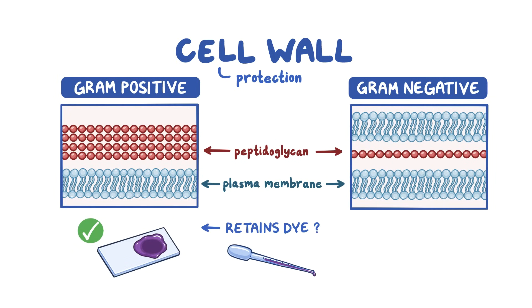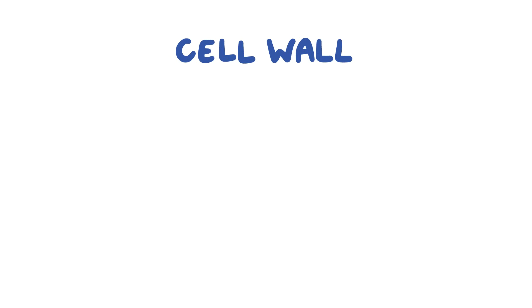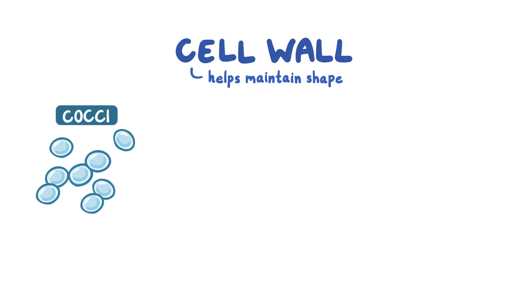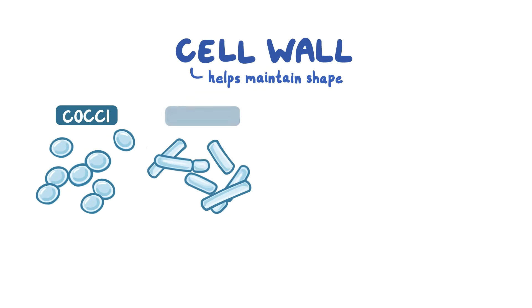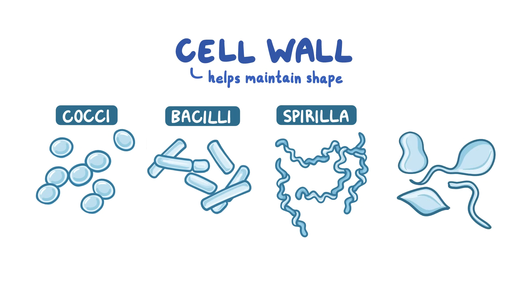Gram-negative bacteria have a thinner layer of peptidoglycan sandwiched between the surface membrane and the plasma membrane, so they can't retain the dye. Additionally, the cell wall helps maintain their shape. The round-shaped bacteria are called cocci, the rod-shaped ones are called bacilli, and spiral-shaped ones are spirilla. Sometimes the same bacteria can have multiple forms, in which case they're called pleomorphic.